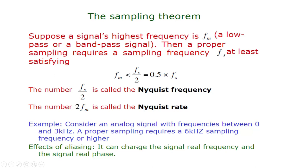If you do not choose a sampling frequency of 6 kilohertz or more, it can lead to aliasing. The effect of aliasing can be very disastrous — it can change the signal's real frequency and even the signal's real phase. We will talk about these aspects in future lectures on multi-rate signal processing.